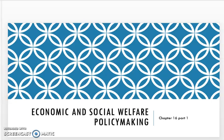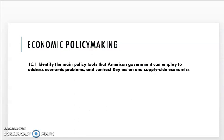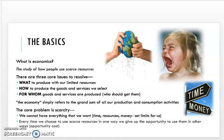Let's get started with economic and social welfare policymaking. The first part is identifying the main policy tools that American government uses to address economic problems, and contrasting Keynesian and supply-side economics. What is economics? It's the study of how people use scarce resources. It's a fact that we don't have enough for the demand, we don't have enough for our wants. So all economies have three core issues to resolve: what to produce, how to produce goods and services, and for whom. Every time we choose to use a scarce resource one way, we give up the opportunity to use it another way — that's opportunity cost.